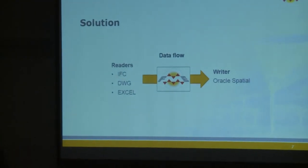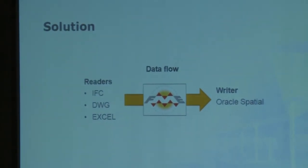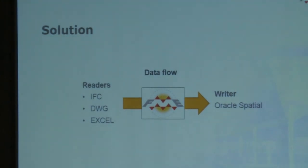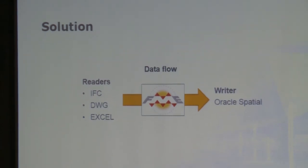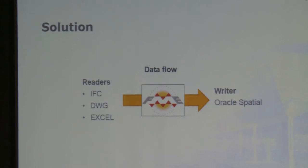Let's talk about the details and the geeky stuff. This is the big picture of the data flow. As input data we have IFC, the export from AutoCAD Architecture, and we have normal DWG files. We also have some Excel files with data from other systems at Forsmark. FME is in the middle as the workhorse, and we write everything to Oracle Spatial and Oracle tabular tables.